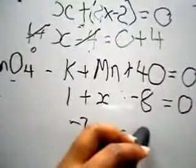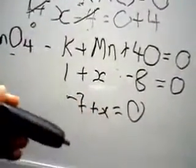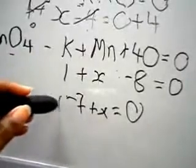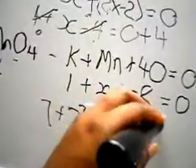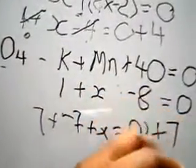From there, we have one minus eight gives you negative seven plus X equal to zero. We get rid of that by adding seven here and adding seven over here...